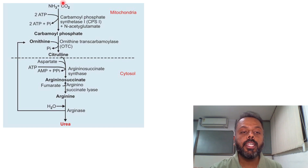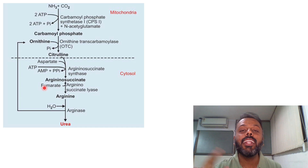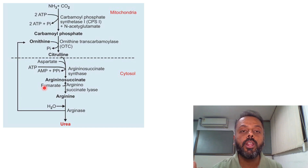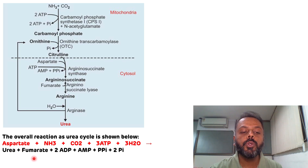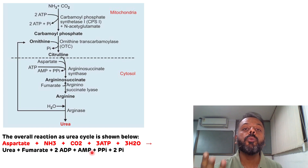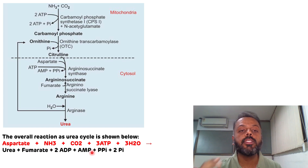Fumarate, which is synthesized at the end of the fourth reaction, is the link between the urea cycle and the TCA cycle — that's why the urea cycle is also known as the urea bicycle. The complete reaction can be summarized as: aspartate, ammonia, and carbon dioxide get converted to urea and fumarate. In this urea cycle there is utilization of four molecules of ATP.